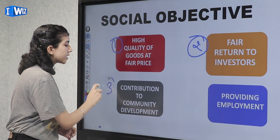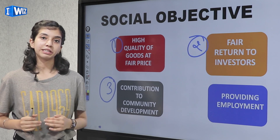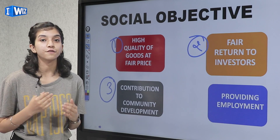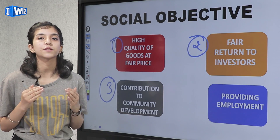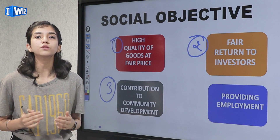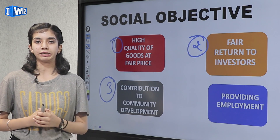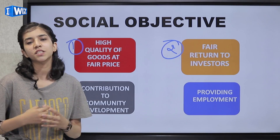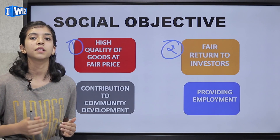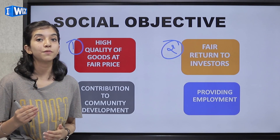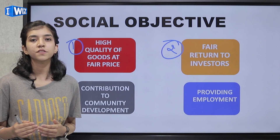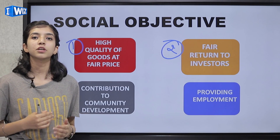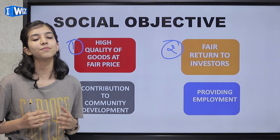The third one is contribution to community development. A business is a part of the society, and it is its moral responsibility to do something for the betterment of the society. Community ke betterment ke liye bohat sari chize kar sakta hai ek business — like setting up libraries, free dispensary services for poor people, paying for blood donation camps or setting up medical camps, and much more.